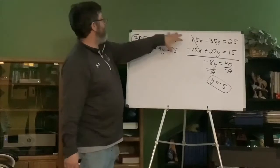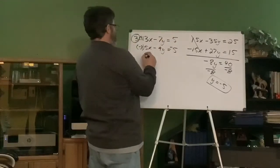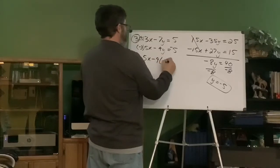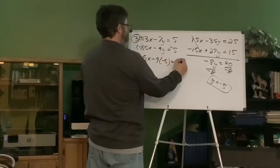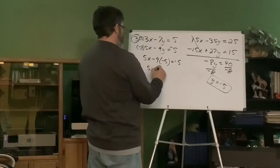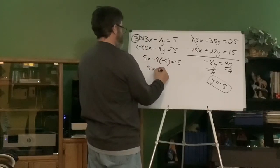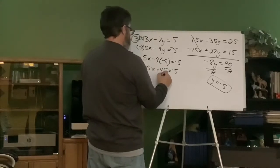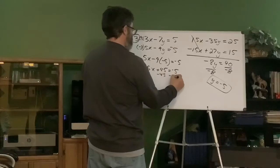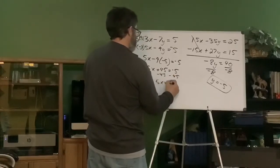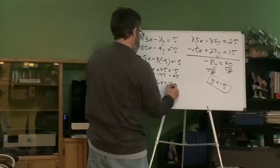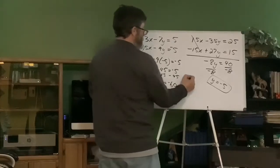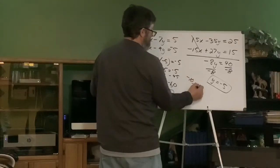Okay. Put it anywhere you want. Any of the four equations. I'm just going to come right over here. Five x minus nine times a negative five equals negative five. Five x plus 45 equals negative five. Got to subtract 45 from each side. Okay. Five x equals negative 50. X equals negative 10. Answer. Negative 10. Negative 5.